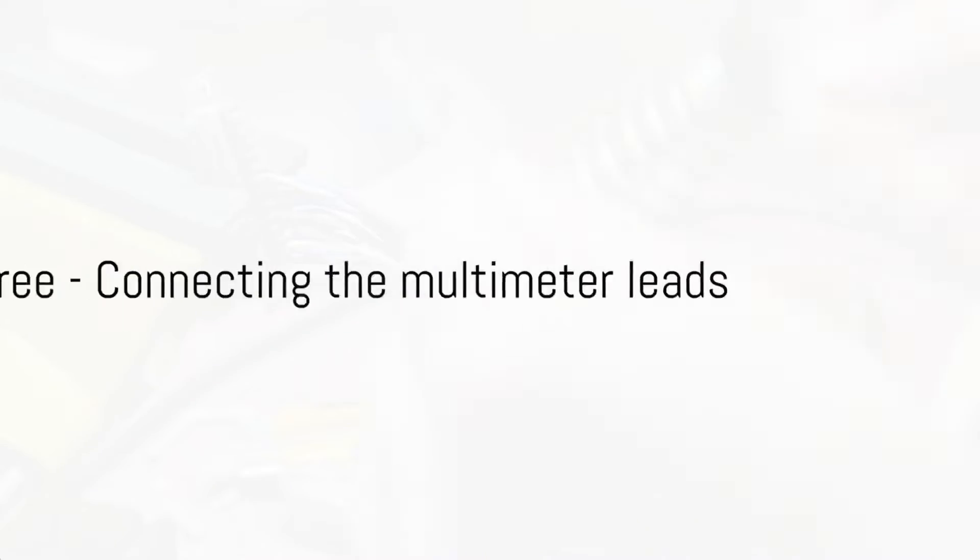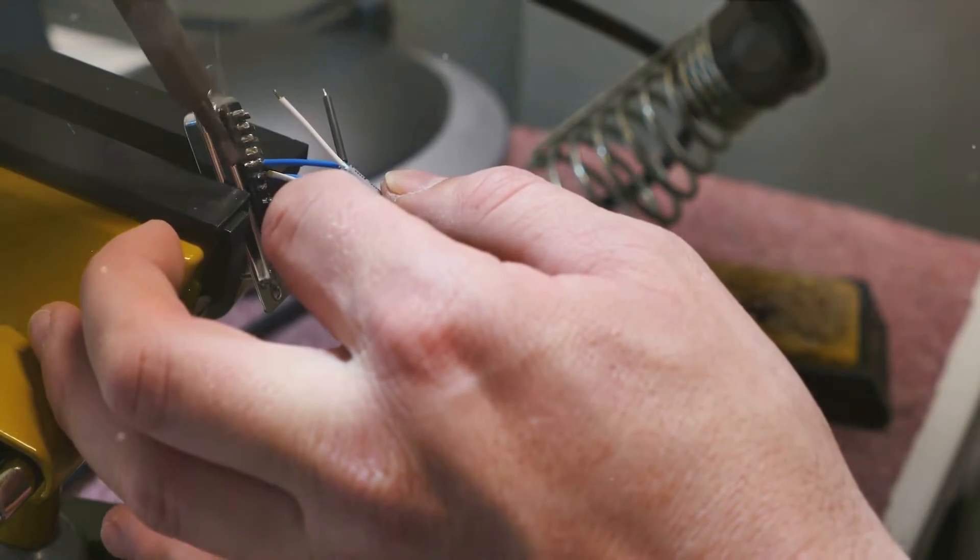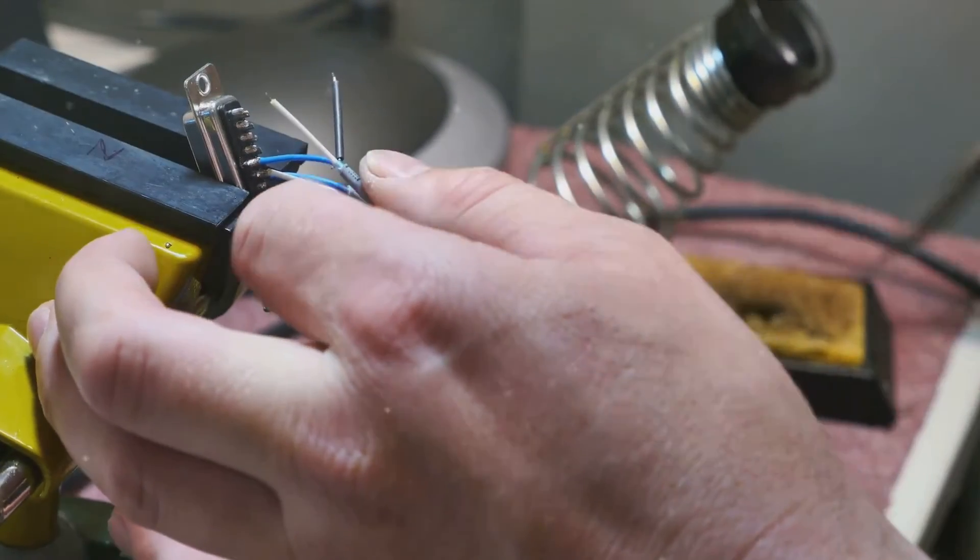Step 3: Connect the multimeter leads to the green and white wires of the load cell. Ensure the red lead connects to the green wire and the black lead links to the white wire.